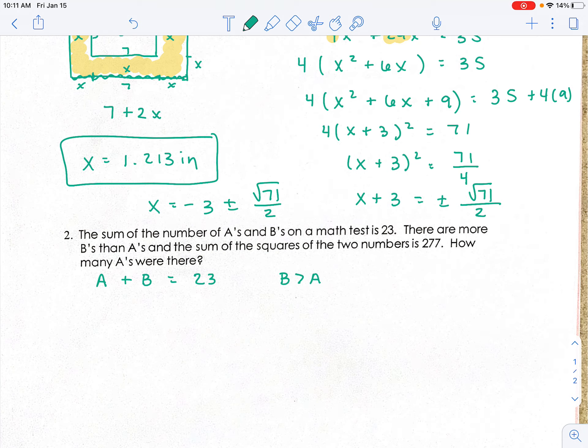There are more B's than A's. And the sum of the squares of the two numbers is 277. So A² + B² = 277. How many A's were there?